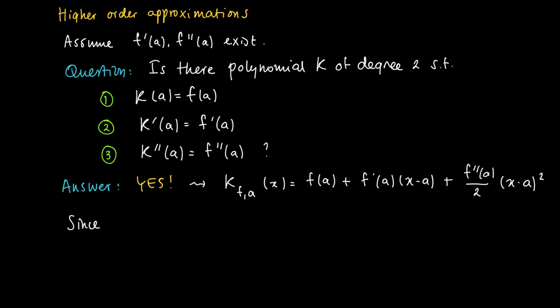It is easily checked that this function K_f,a satisfies the conditions 1, 2 and 3. Well, let's check one. Substituting a gives f(a) plus f'(a) times (a-a), so a minus a is 0, so this term vanishes. And the same holds for the quadratic term since we are multiplying the second order derivative of f divided by 2 with 0. So what we obtain is the function value f(a).